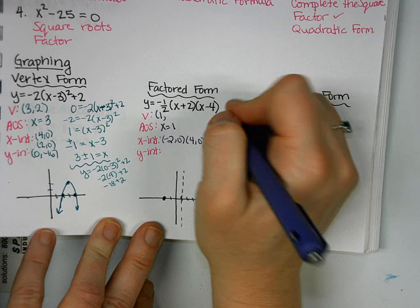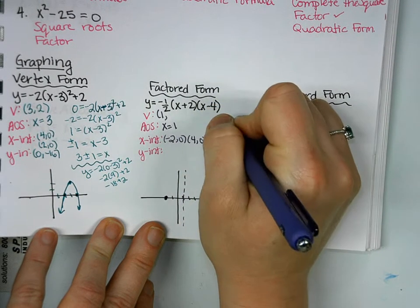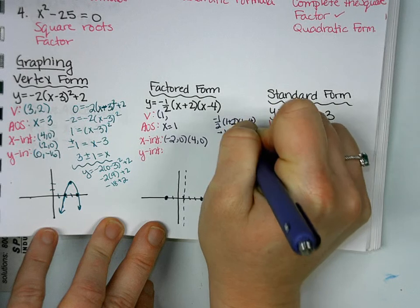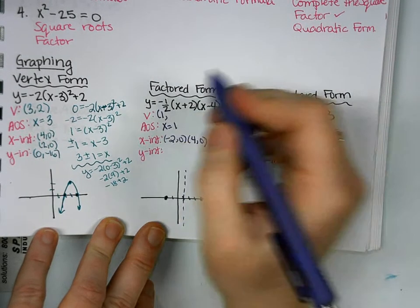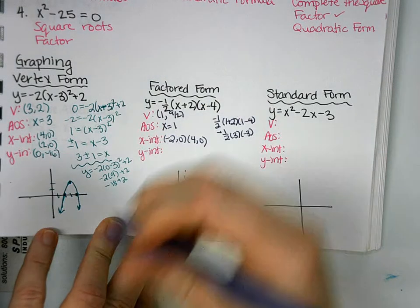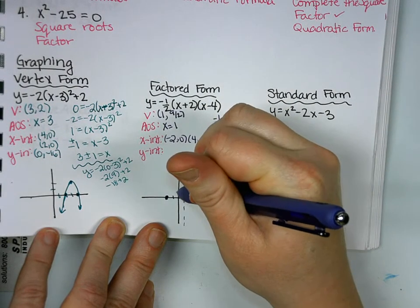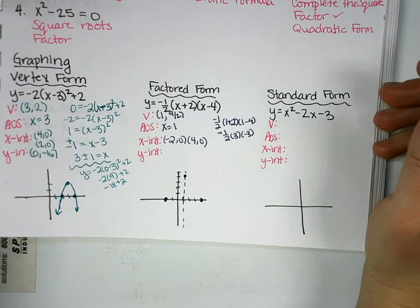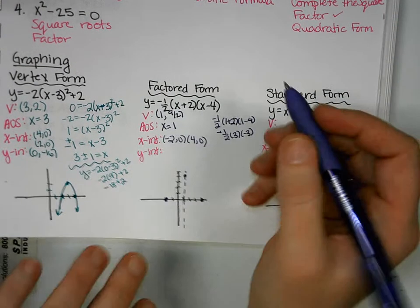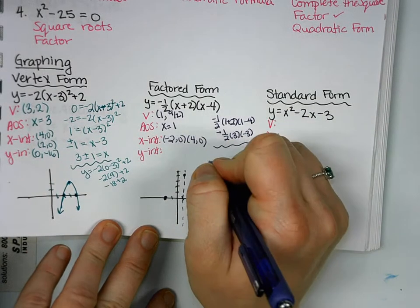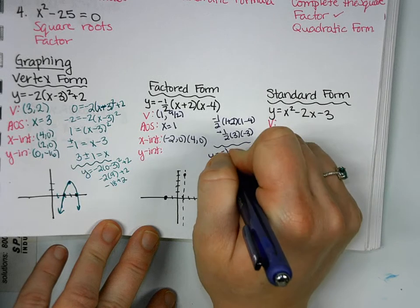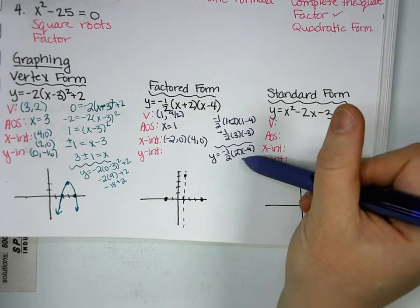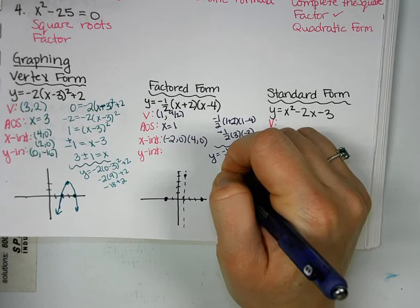Plug 1 into the equation. So negative 1 half, let's see, 1 plus 2 and 1 minus 4. Negative 1 half times 3 times negative 3. So it looks like we're going to get a fraction here. 9 over 2. So that's 1 comma 9 halves is 4 and a half. So I'm going to go up about 4 and a half. So what's the last thing we need to find here? The y-intercept. So that's when we set x equal to 0. So we'll have negative 1 half times 2 times negative 4. So that will give us negative 8. And then negative 8 times negative 1 half will give us 4.